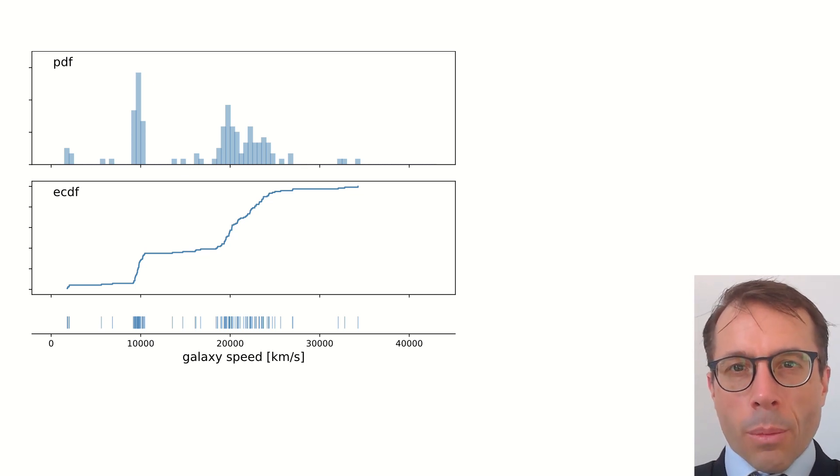Incidentally, one neat thing about the empirical CDF is that you don't need to bin data to plot it. This bottom plot shows every single data point, whereas the top plot only shows an aggregate, and you always have to worry about whether you're distorting your plot by the way you've chosen your bin sizes.